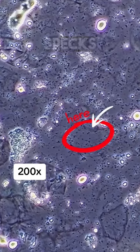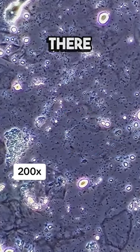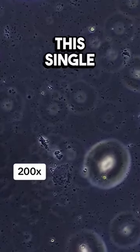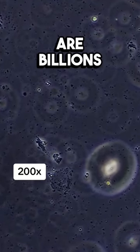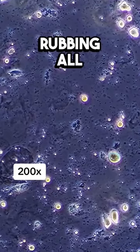Each of those tiny dark specks are bacteria, and there are millions of them in this single drop of water. And inside the sponge, there are billions, which is what you're rubbing all over your dishes.